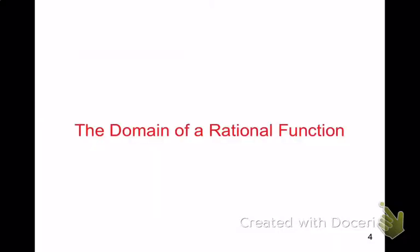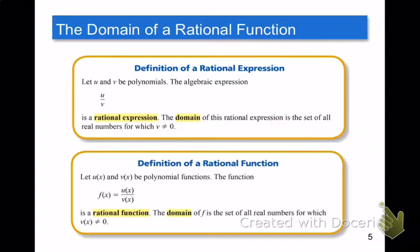Let's talk about the domain of a rational function first. This next slide shows you the definition of a rational expression where you have two polynomials, u and v, put them over each other as a fraction. This becomes then a rational expression. The domain of this expression is the set of all numbers so that v is not zero. So the denominator of that fraction cannot be zero if you have two polynomials written as a fraction or a ratio one on top of the other.